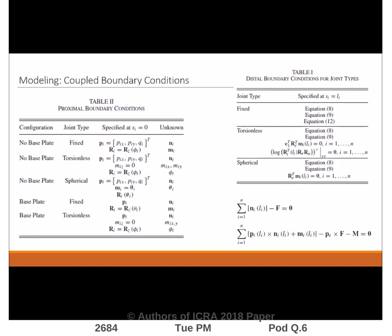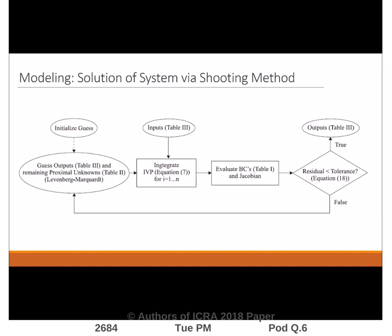These individual link models are coupled through distal and proximal boundary conditions, which depend on the joint types used at the proximal and distal ends. The resulting system of link models must be solved simultaneously to obtain the static equilibrium shape of the entire robot.